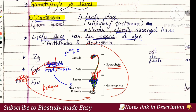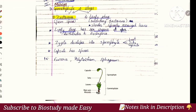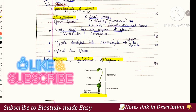This is the reproduction of the gametophyte in bryophytes. Examples of mosses include Funaria, Polytrichum, and Sphagnum. So this is bryophytes in detail.